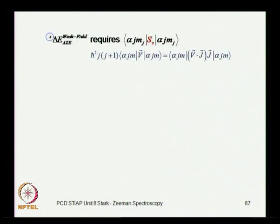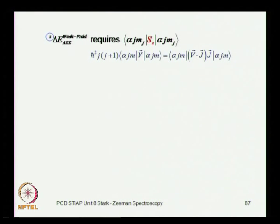So the internal effects take over, and J and MJ are the good quantum numbers, and not ML and MS. The eigenstates are not eigenstates of LZ and SZ, but they are eigenstates of J² and JZ.